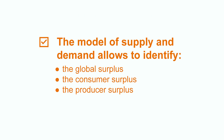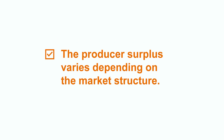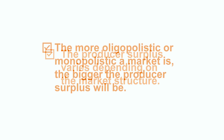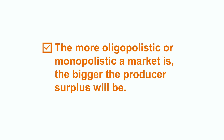A quick recap. We have seen in this class that the model of supply and demand allows us to identify the global surplus, the consumer surplus, and the producer surplus. The producer surplus varies depending on the market structure. The more oligopolistic or monopolistic a market is, the higher the producer surplus will be.